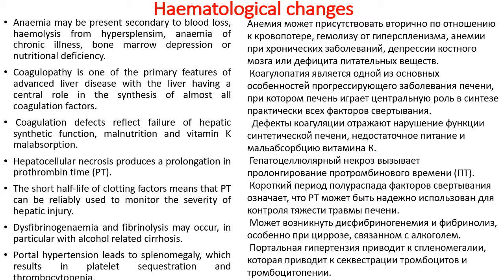Hepatocellular necrosis produces a prolongation in prothrombin time. The short half-life of clotting factors means that prothrombin time can be reliably used to monitor the severity of hepatic injury. Disseminated intravascular coagulation and fibrinolysis may occur, in particular with alcohol-related cirrhosis. Portal hypertension leads to splenomegaly, which results in platelet sequestration and thrombocytopenia.